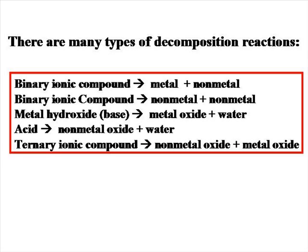There are just as many types of decomposition reactions as there were synthesis. If you have a binary ionic compound and decompose it, it will form a metal element and a non-metal element. A binary covalent compound should form two non-metal elements. Metal hydroxides or bases will decompose to form metal oxides in water. Acids will form non-metal oxides in water. And your ternary ionic compounds will decompose to form a non-metal oxide and a metal oxide.